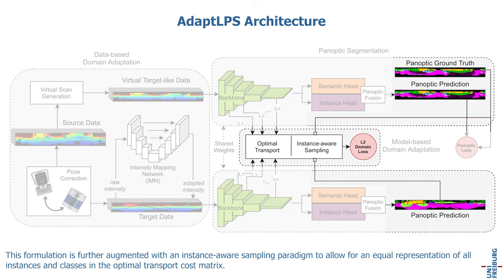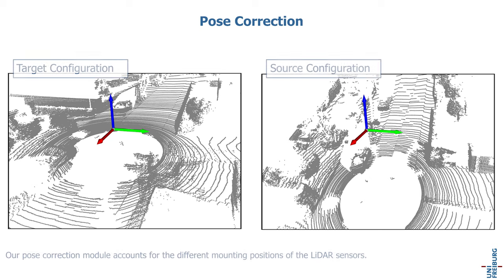This formulation is further augmented with an instance-aware sampling paradigm to allow for equal representation of all instances and classes in the optimal transport cost matrix. Our post-correction module also accounts for the different mounting positions of the LiDAR sensors.